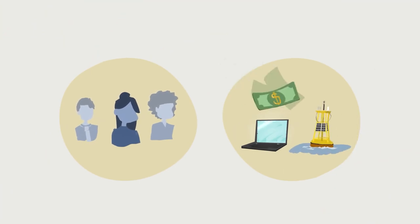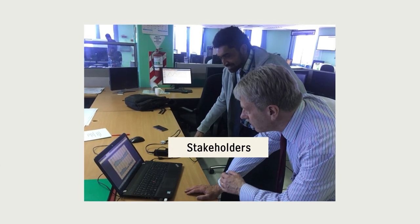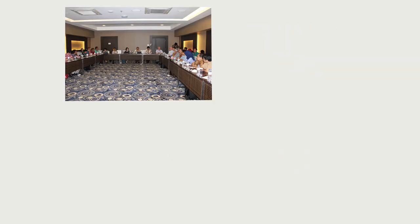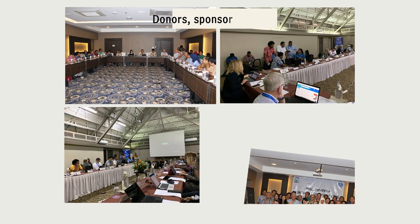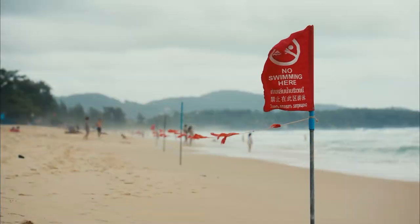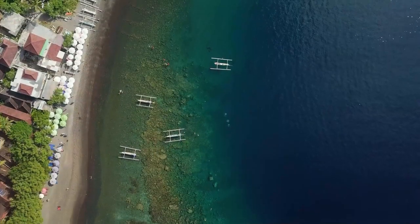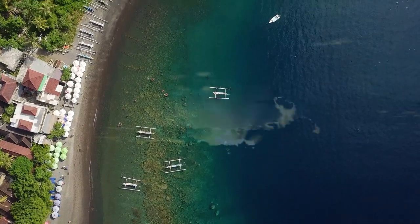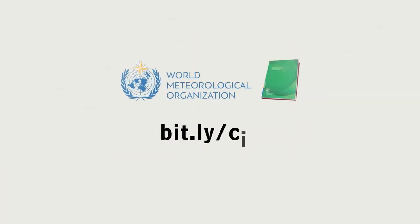As many countries have limited staff and funding to rapidly implement this early warning system, these steps can help them bring together other stakeholders, experts and resources, while also providing guidance on how to engage with donors and sponsors and with WMO and its team of experts. By setting up strong early warning systems, countries can ensure they are better prepared for coastal inundation, saving lives and livelihoods.